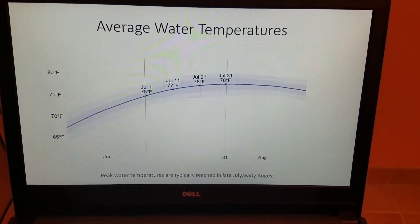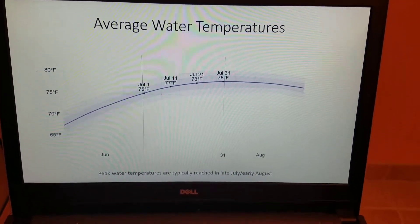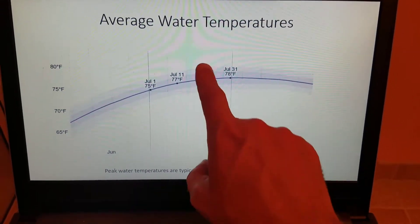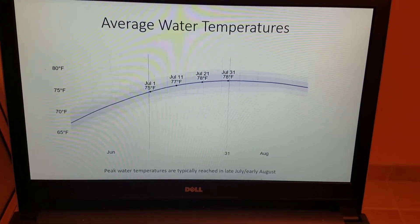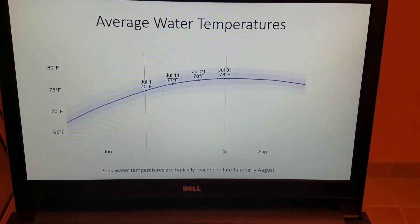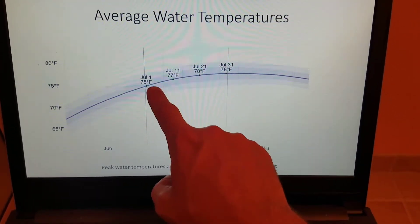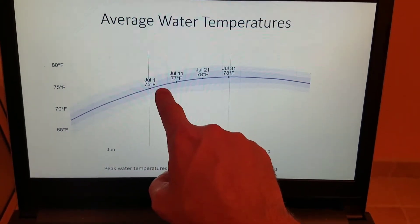And then the average water temperatures. Notice this time of year, late July and early August, that's typically when our water temperatures reach their peak for the year. Notice the average water temperature of 75 degrees on July 1st, rising all the way up to 78 degrees by the end of the month, July 31st. So the water temperature is not much of a change over the course of the month.